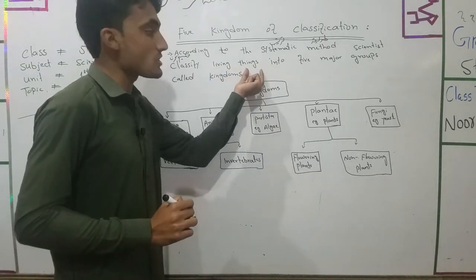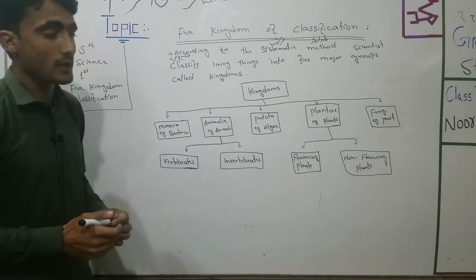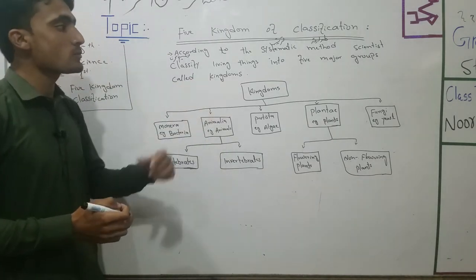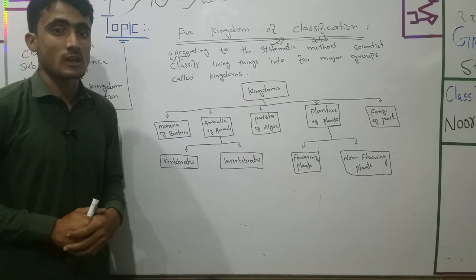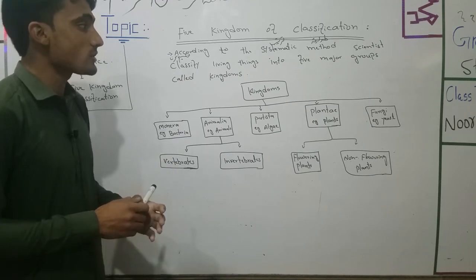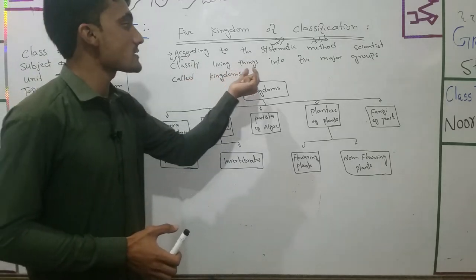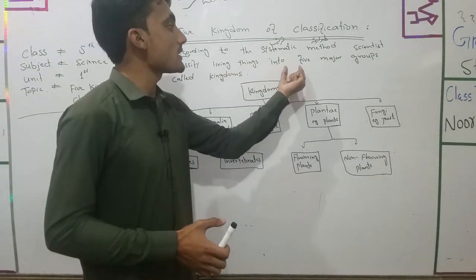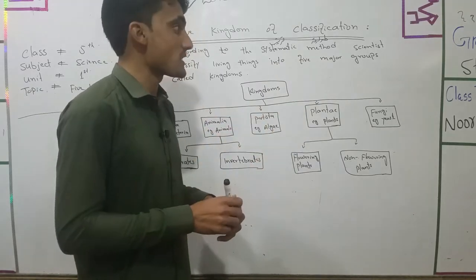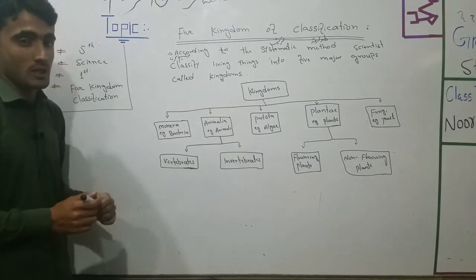All living things — 'tamaam jandaro ko' — are divided into 5 major groups, 5 big groups. These groups are called kingdoms. Kingdom classification is the highest level. Scientists divided all organisms into 5 major kingdom groups.